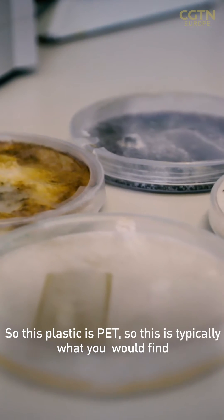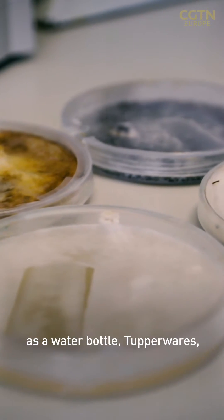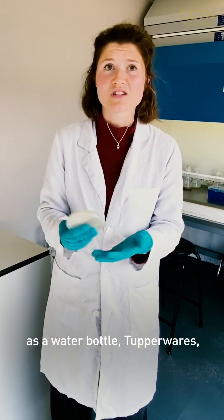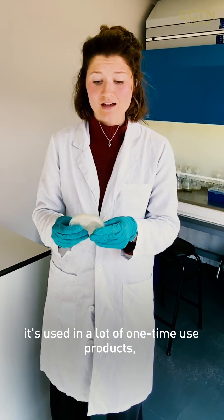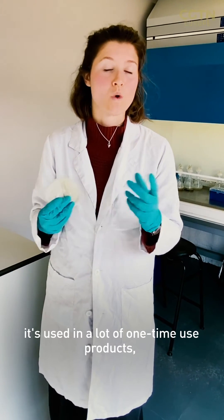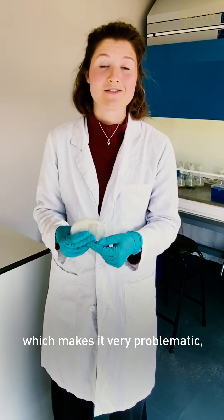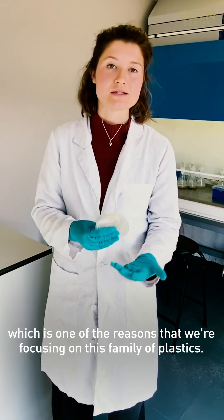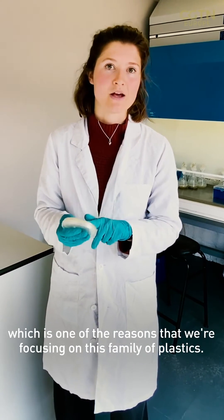So this plastic is PET, so this is typically what you would find in a water bottle, Tupperwares, it's used in a lot of one-time-use products which makes it very problematic, which is one of the reasons that we're focusing on this family of plastics.